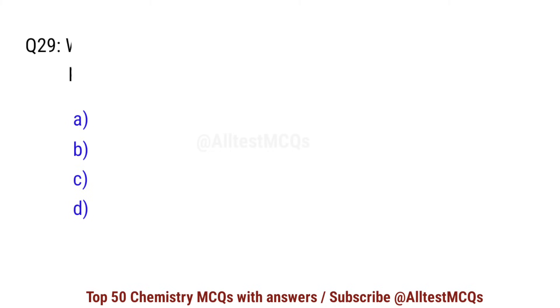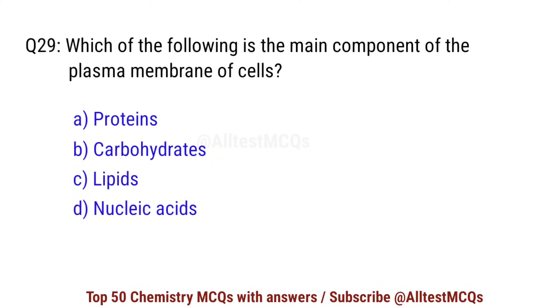Question number 29. Which of the following is the main component of the plasma membrane of cells? Right option is C: lipids.